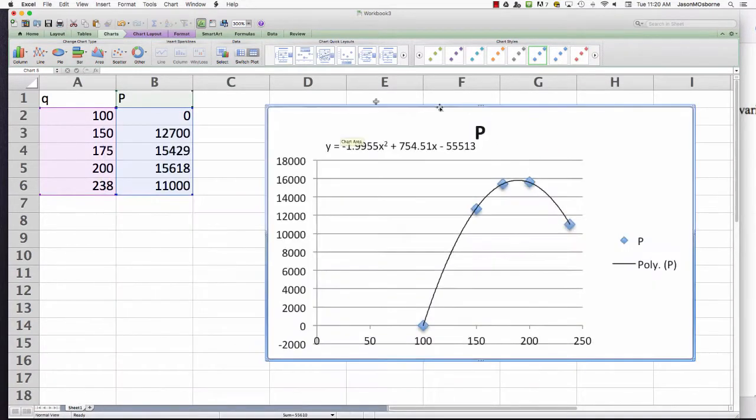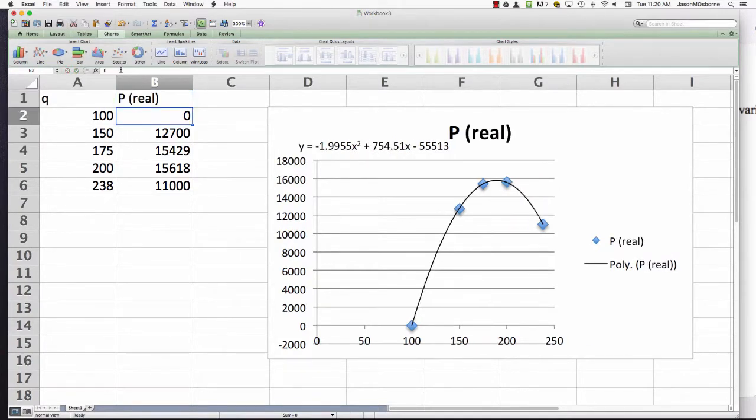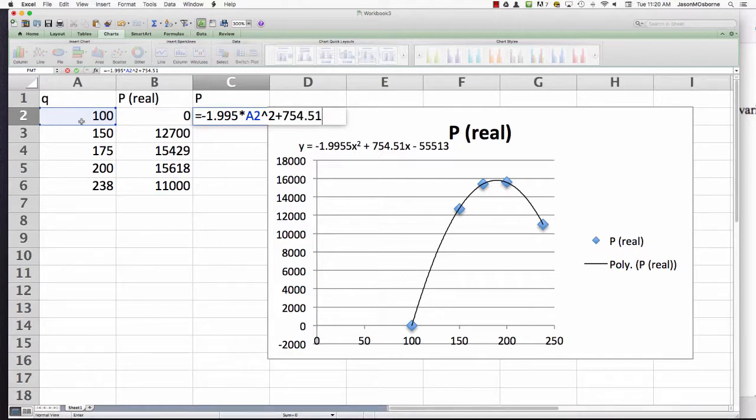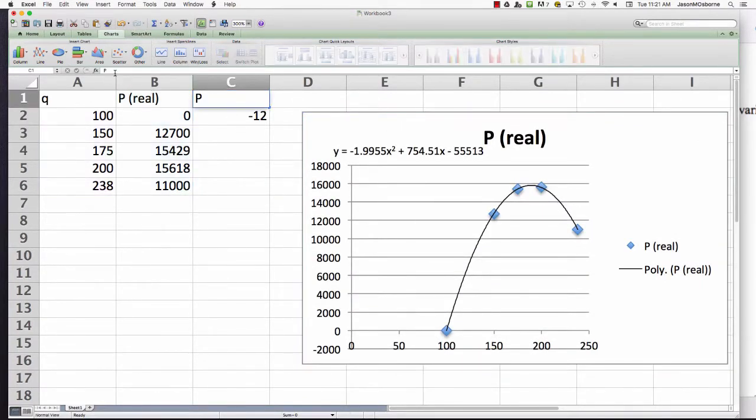Now let's see what's going on with this trend line. We have the profit - this was real data, so maybe I should put a title on that. That's real. But what there is, is there's actually profits that come from this function. So I'm going to put in this formula: negative 1.995 times the value squared plus 754.51 times Q minus 55,513. If I'm using the formula that's given, I don't get exactly the real data, but I get modeled data, approximate data.